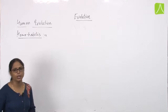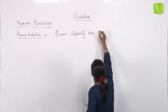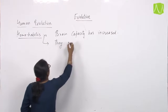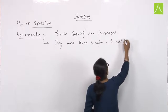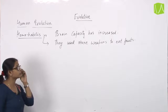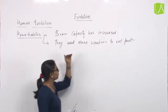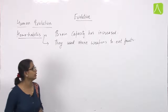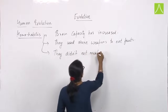The third stage is Homo habilis. Homo habilis had a slightly increased brain capacity compared to Australopithecus. They still used stone weapons to eat fruits, and they started making different varieties of stone weapons. They still did not eat meat.